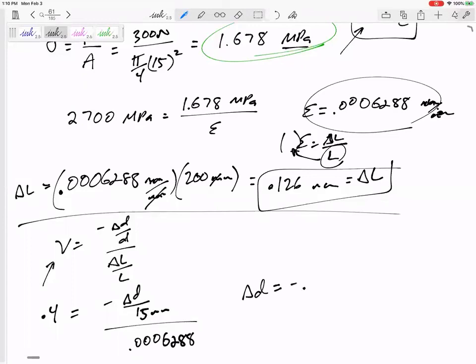Change in diameter is negative 0.00377 millimeters. Did it ask for its diameter? Because if it asked for the diameter, it'd be 15 minus that, so 14.99—you know, that'd be its new diameter. It's just change in diameter.